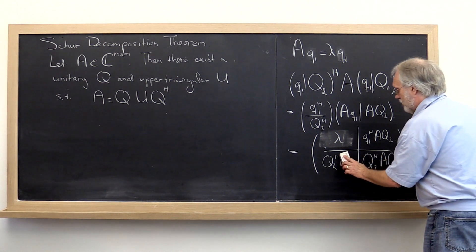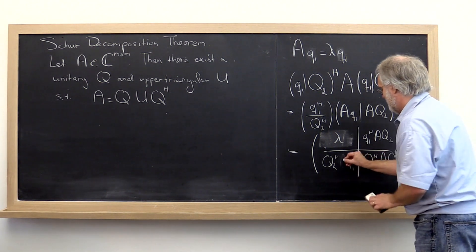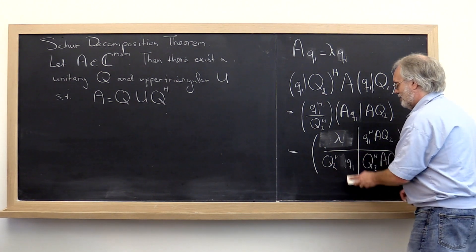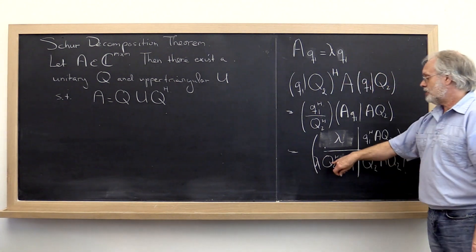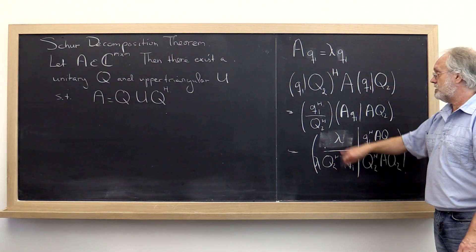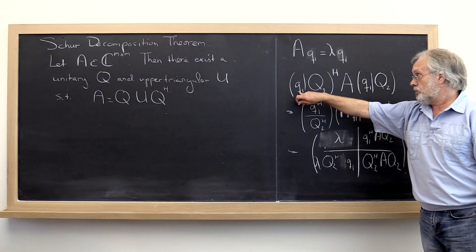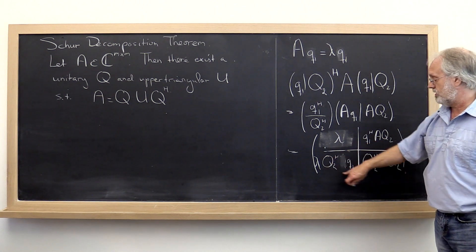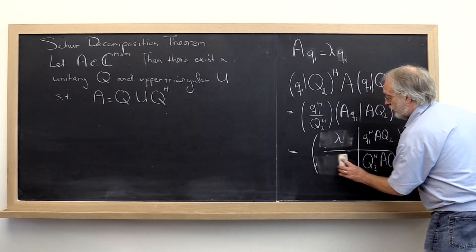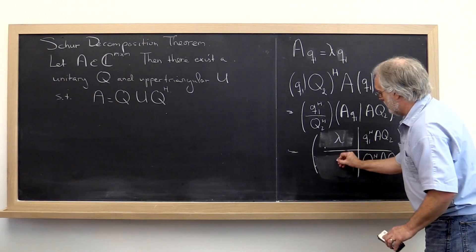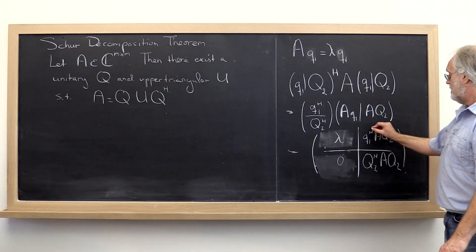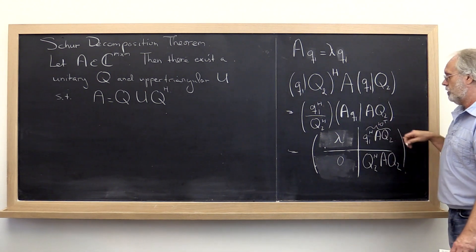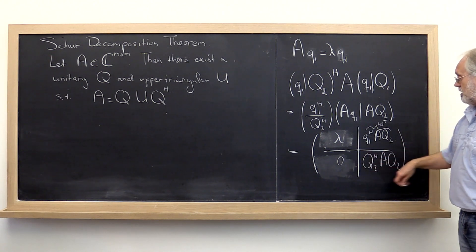Similarly, this right here becomes lambda times q1, but a scalar we can always bring to the front. And notice that we chose all of these columns in q2 to be orthonormal to q1 or orthogonal to q1. And therefore this right here is zero, and therefore we end up with a zero vector right here. Now this is just some vector. We can call it whatever we want, W transpose, some row. And this is just some matrix.